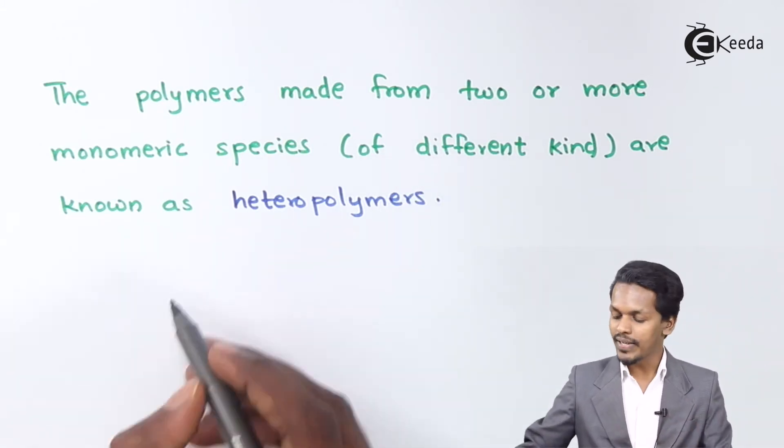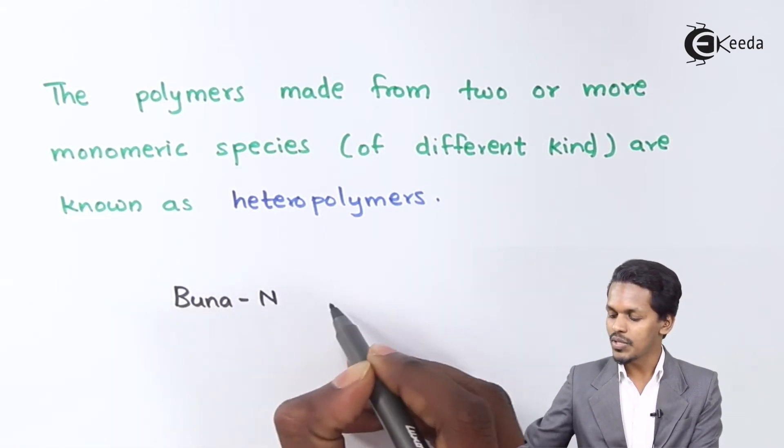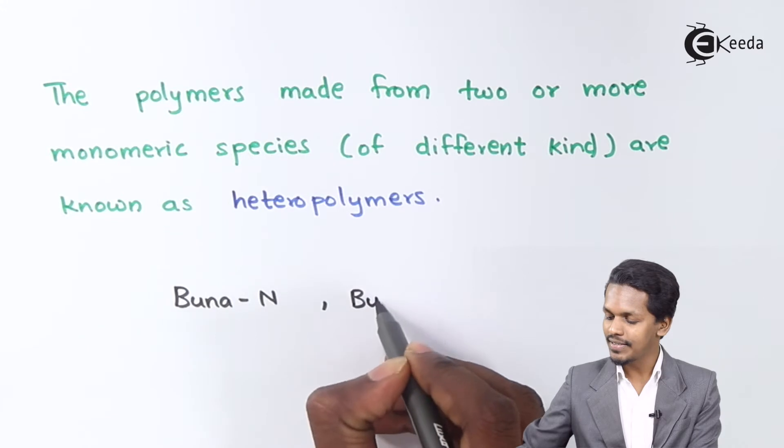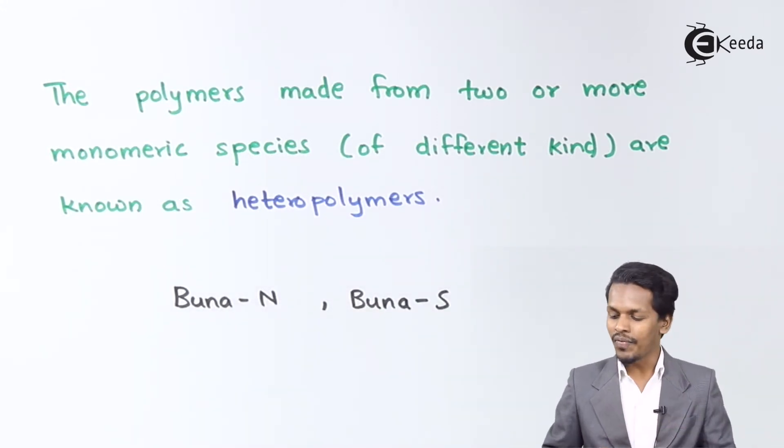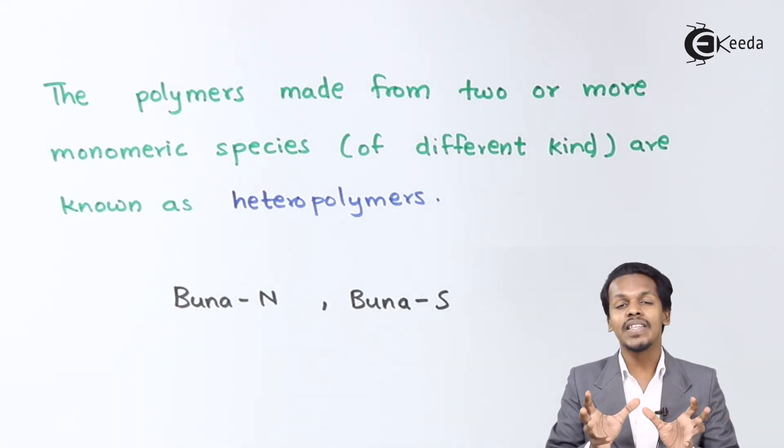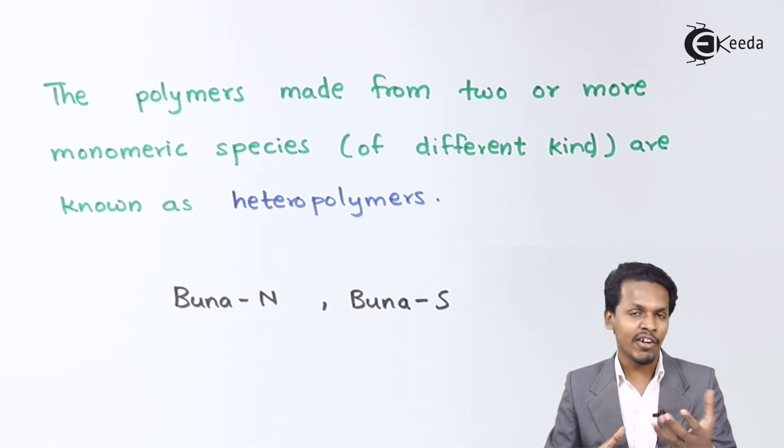For example, if you talk about Buna N or Buna S, this is an example of a heteropolymer. In this case, the monomers that we are using are comparatively different from each other, and that's the reason they are known as heteropolymers.